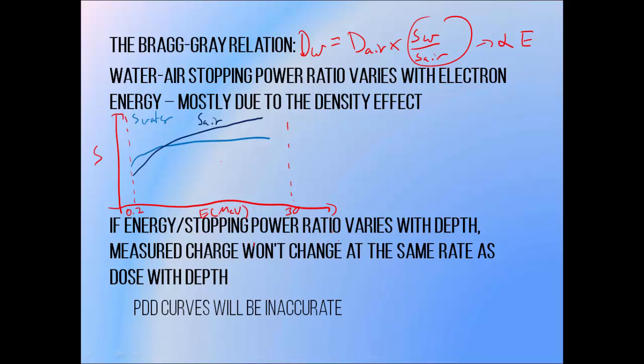But notice how the air stopping power increases more rapidly with energy than that of water. This is due primarily to the density effect. Stopping power tends to increase more slowly when material density is high. The density effect effectively slows down the rate of stopping power increase with electron energy. So air, being less dense, is less influenced by the density effect. So the stopping power tends to rise more quickly than it does in water, which has a higher density.